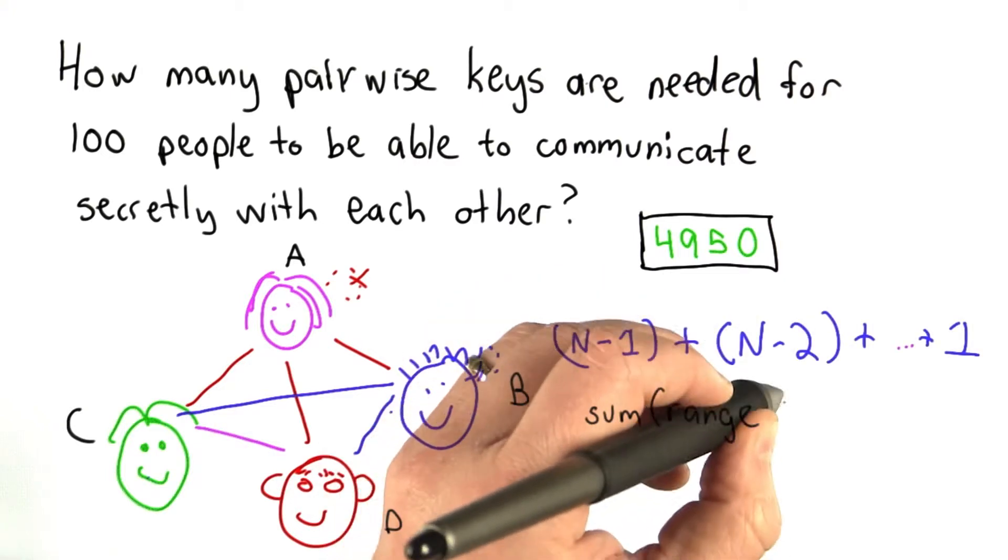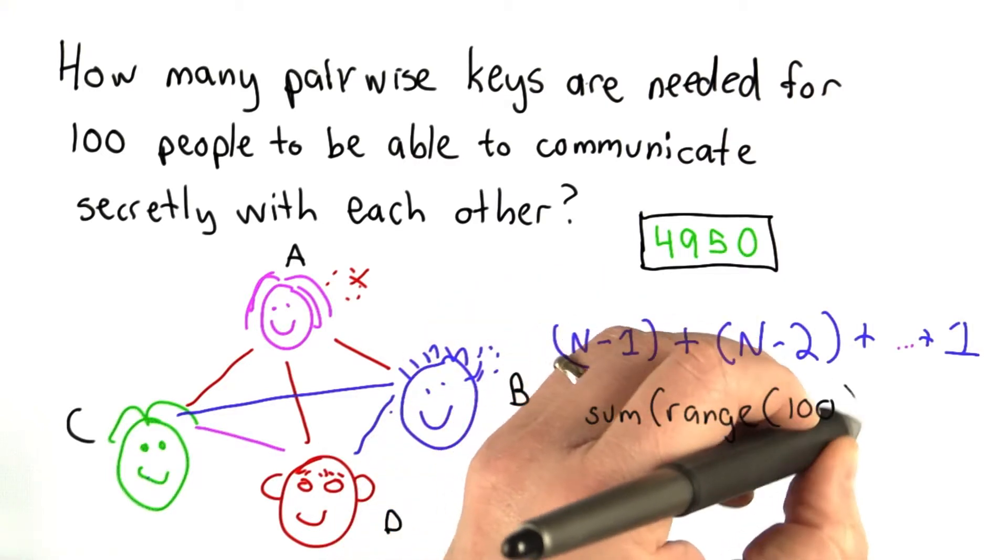And that keeps going until we get to the last person who already has keys shared with everyone and won't need a new key. So we could compute that in Python, and this would compute the sum of the numbers from 0 to 99, which is 4,950.